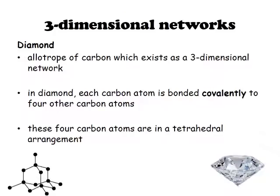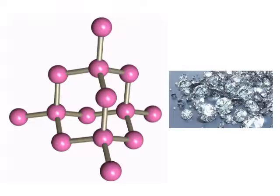Graphite is usually compared with diamond, which is a three-dimensional network and also an allotrope of carbon. In diamond, each carbon is bonded covalently to four other carbon atoms, compared to three in graphite. These form a tetrahedral arrangement, as shown in the diagram. So diamond has four strong covalent bonds per carbon atom, as opposed to three in graphite.